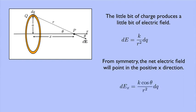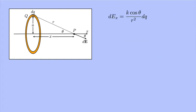So, the x component of the tiny little bit of electric field is k cosine theta over r squared dq. So, we have our formula for the x component of the tiny little bit of electric field.